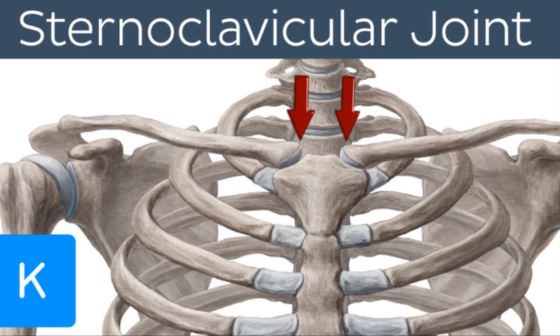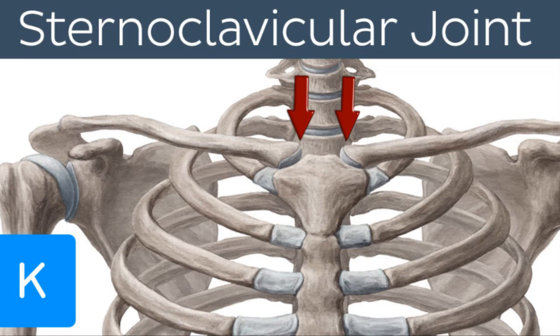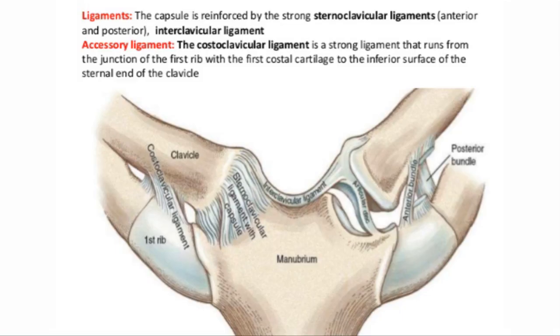The sternoclavicular joint is the sternum. There's a manubrium, which is the top part of the sternal area, and the clavicle, which is a bone that comes all the way across to the shoulder. That sternoclavicular joint occurs between the proximal end of the clavicle and the clavicular notch of the manubrium of the sternum, together with a small part of the first costal cartilage.